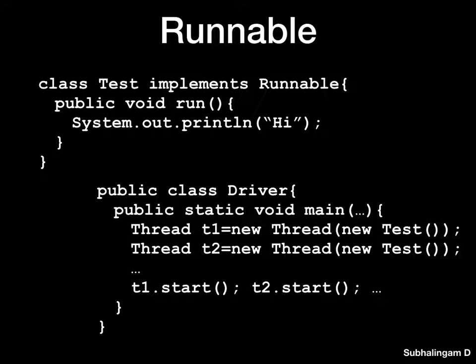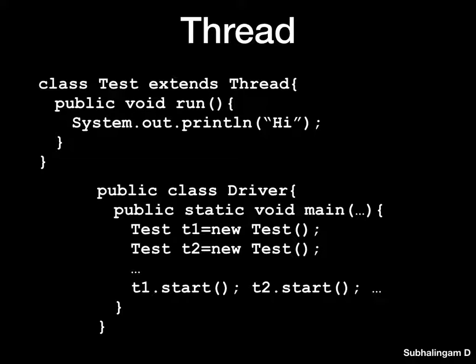This is what multi-threading means. Now we'll look at how we can use a class for threads. This is pretty simple and straightforward, similar to the previous approach, but in this case we are not going to use a separate Thread object because Test itself inherits from Thread — it is a subtype of Thread. So here we just say 'Test t1 = new Test(); Test t2 = new Test();' and call t1.start(). Everything else is similar.